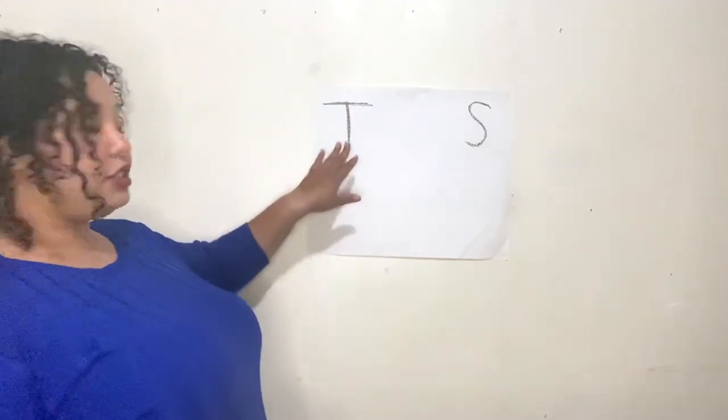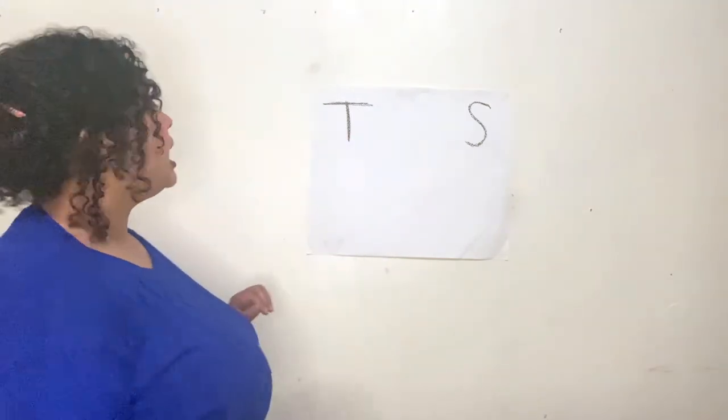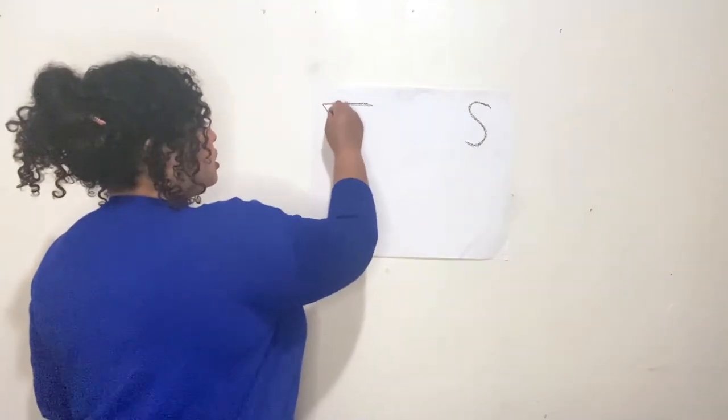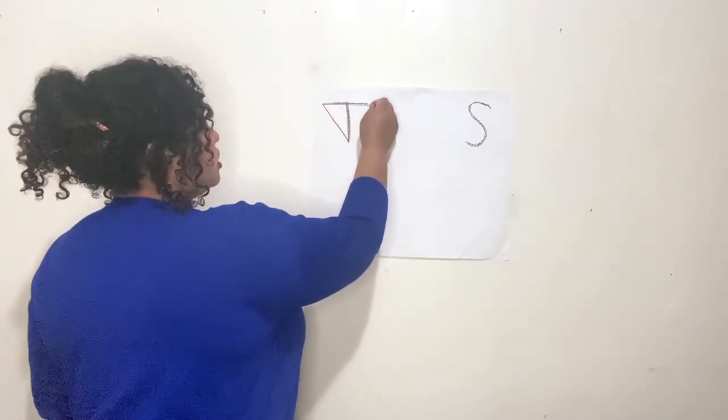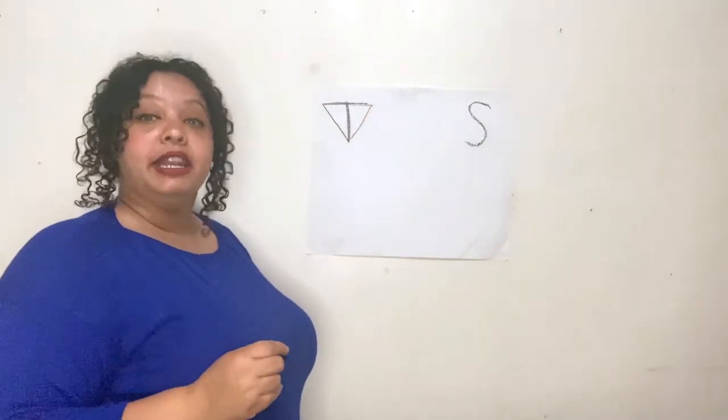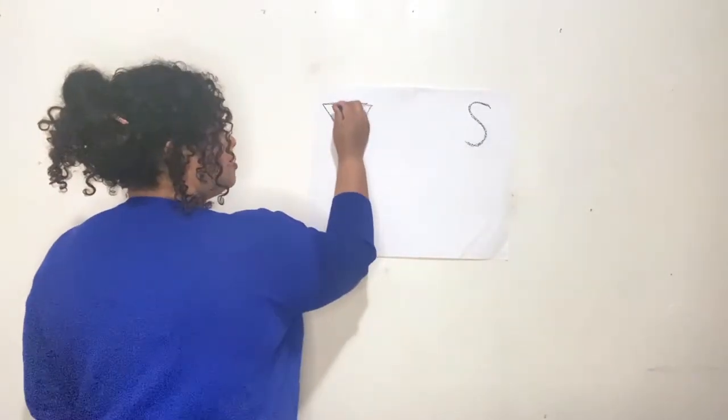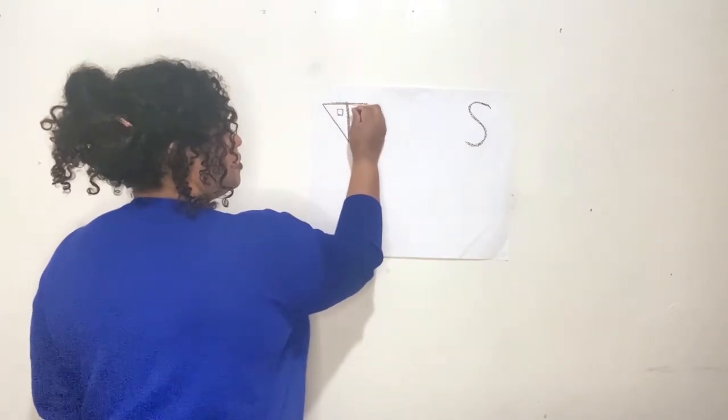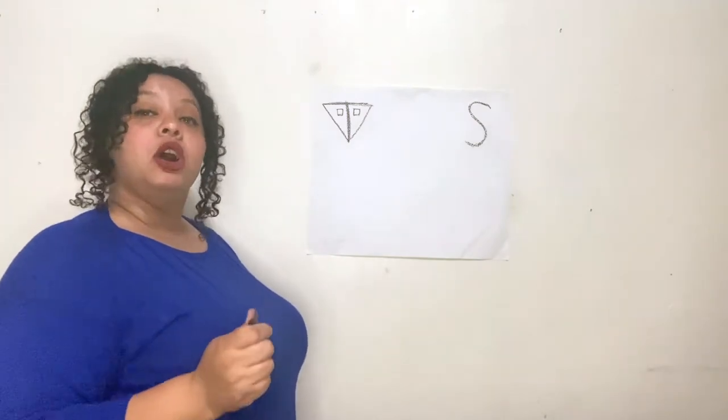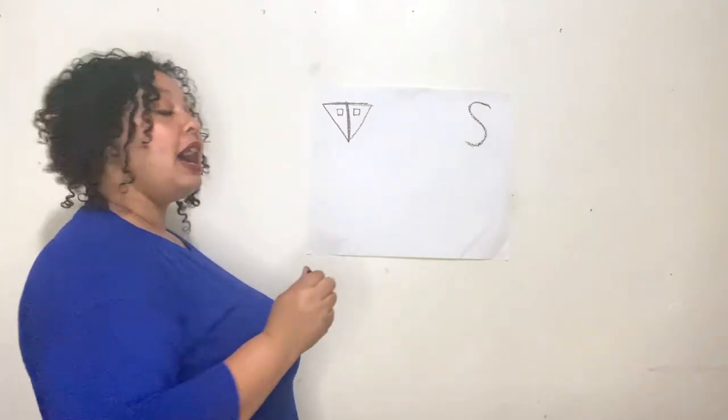Now back to Timmy. Timmy's house had two rooms in the shape of triangles. Each room had its own window. And also there is a chimney on each side of the house.